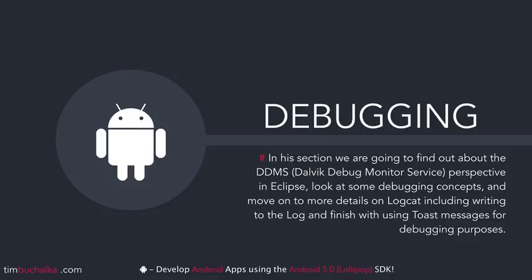We're going to look at debugging and specifically how to use that. And then we're going to move on to more details on Logcat, which we have already covered. But we're going to include how to filter messages, but also how to write from our application to the log file, and then get Logcat to find our messages.